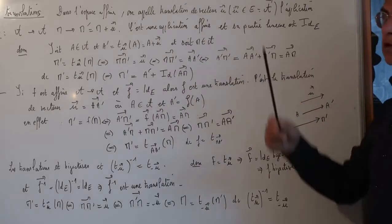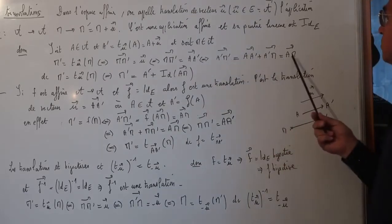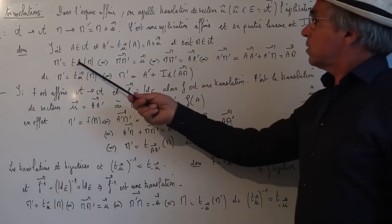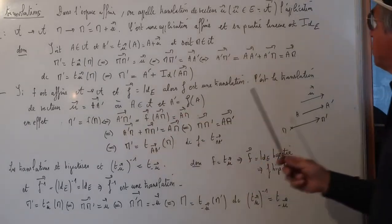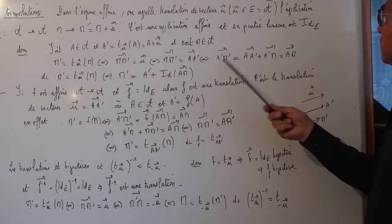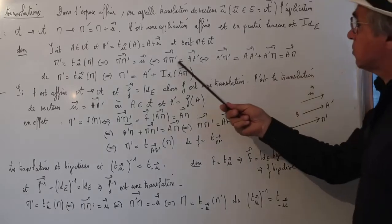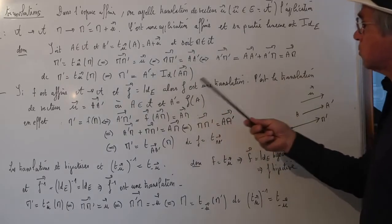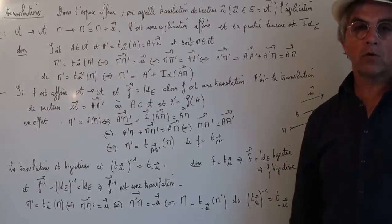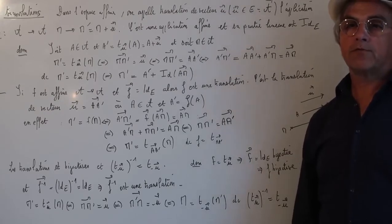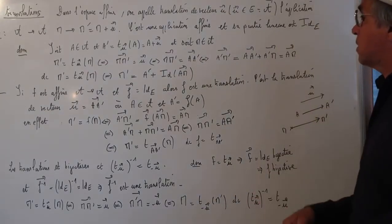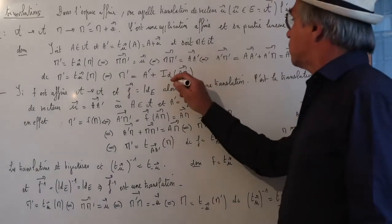En utilisant la règle de Chasles, on obtient une autre égalité : A'M' est égal à vecteur AM. Donc dire que M' est l'image de M équivaut à dire que M' est égal à A' plus vecteur AM, qui n'est rien d'autre que l'identité appliquée à AM. Cela montre qu'on a affaire à une application affine et que sa partie linéaire c'est l'identité de A.